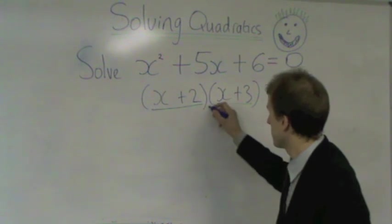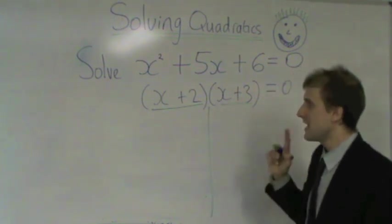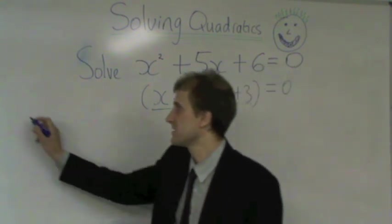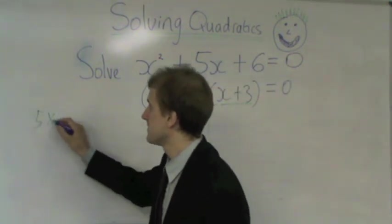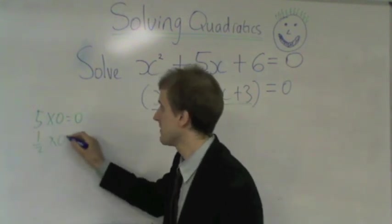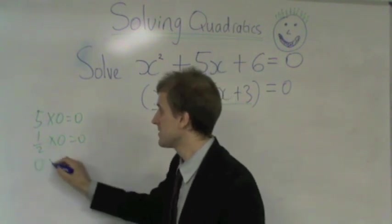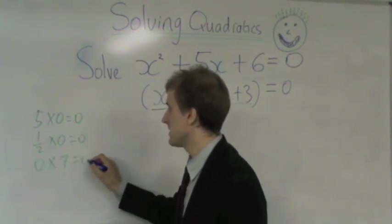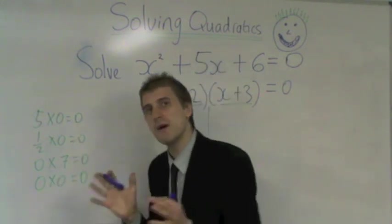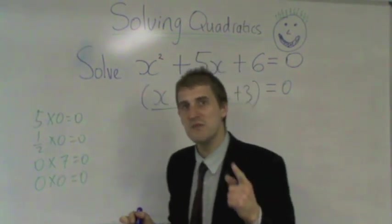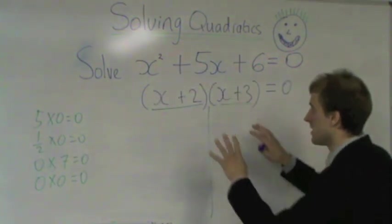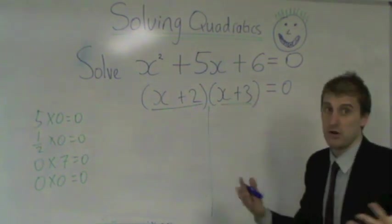And that's the key to solving your quadratic, because any two numbers that times together to make zero, one of them has to be zero. Let's think about this: 5 times zero is zero, a half times zero is zero, zero times seven is zero, zero times zero is zero. But we can't come up with a pair of numbers where one of them isn't zero. I've got two numbers that times together to make zero, one of them has got to be zero.